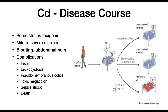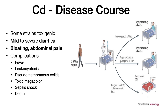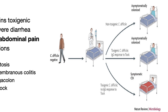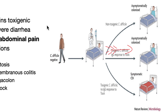C. diff is a complicated infection for humans. It appears to be part of the normal microbiota of some people and causes no problems at all. Some strains are non-toxigenic and colonize humans asymptomatically. However, some strains produce toxins that cause mild to severe bloating and abdominal pain. In some patients with a strong IgG response to the toxins, they are able to control this infection.